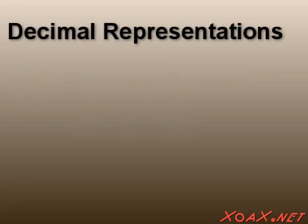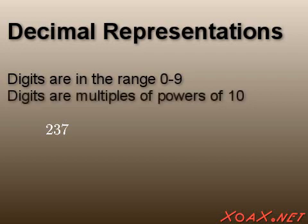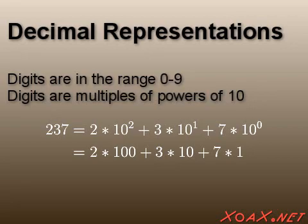For example, an ordinary decimal representation of a number like 237 has digits that are in the range 0 to 9 and are multiplied by powers of 10. The number 237 is 2 times 10 to the 2 (or 100), plus 3 times 10 to the 1 (or 10), plus 7 times 10 to the 0 (or 1). This is called decimal because the digits are multiples of powers of 10.